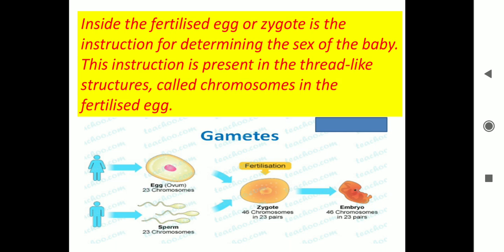Inside the fertilized egg or zygote are the instructions for determining the sex of the baby. These instructions are present in thread-like structures — as you have studied in the previous chapter, these are called chromosomes in the fertilized egg. You can see the picture.